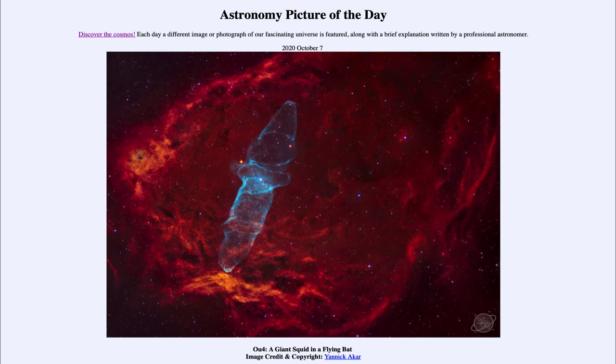So where can you find a giant squid inside a flying bat? Well, probably only out in space. Using imagination to see what various shapes look like, we see here a couple different things. We see the larger red area, which is the emission of hydrogen gas, and that is what is known as the flying bat nebula.